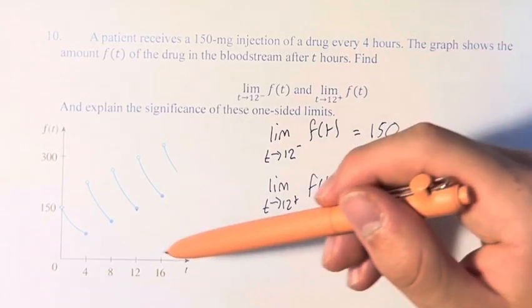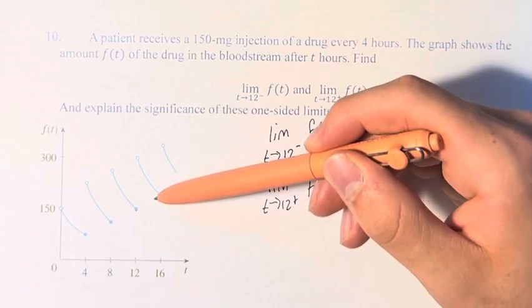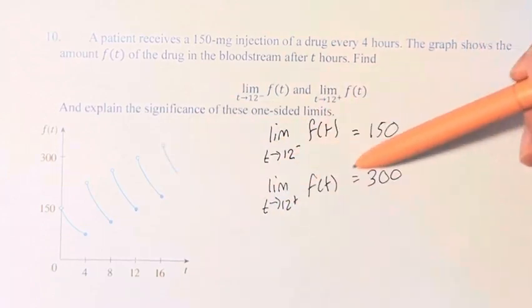The significance of this is that at that point, they're given an injection which is 150 milligrams, so that explains the jump and the difference between these two limits.